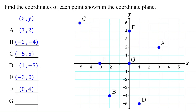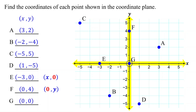In general, if a point lies on the x-axis, its y-coordinate is 0. If a point lies on the y-axis, its x-coordinate is 0. If a point lies where the x and y-axis intersect, which is the origin, both its x and y-coordinates are 0. Therefore, the coordinates of point G are (0, 0).